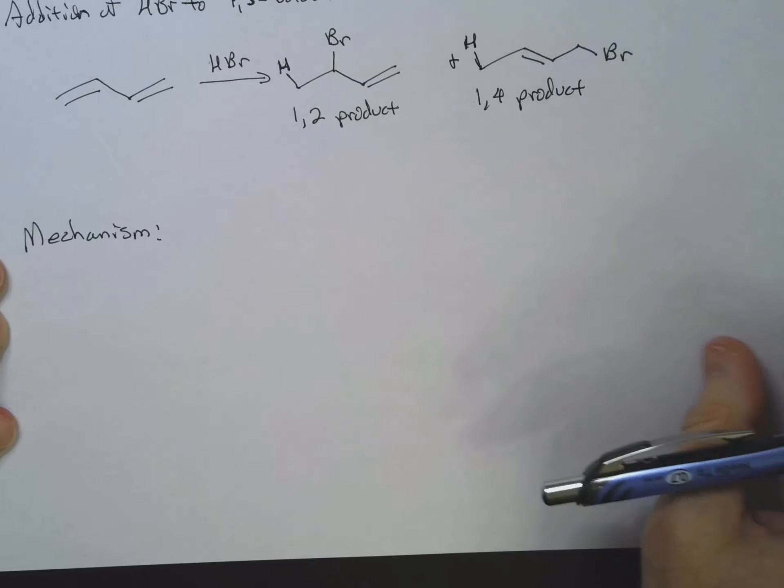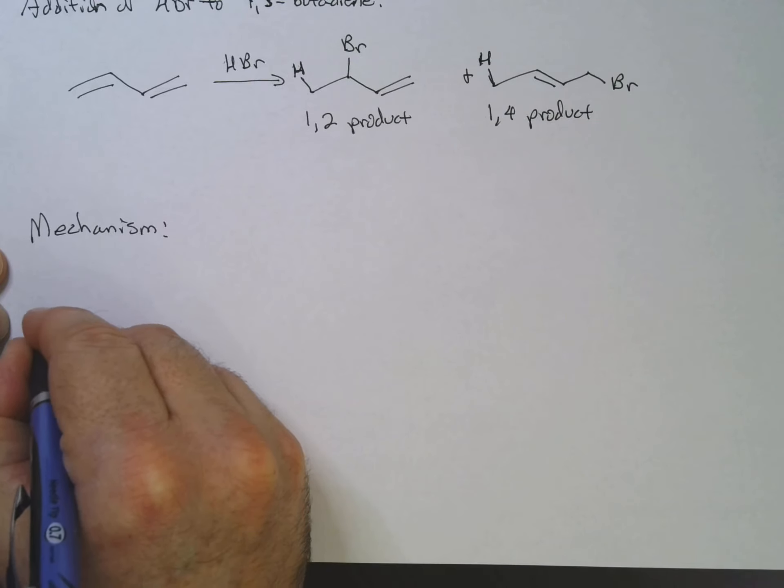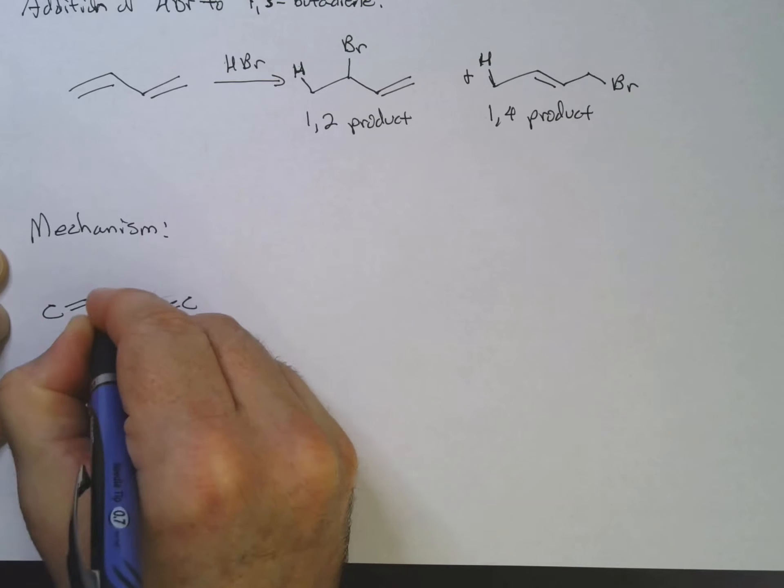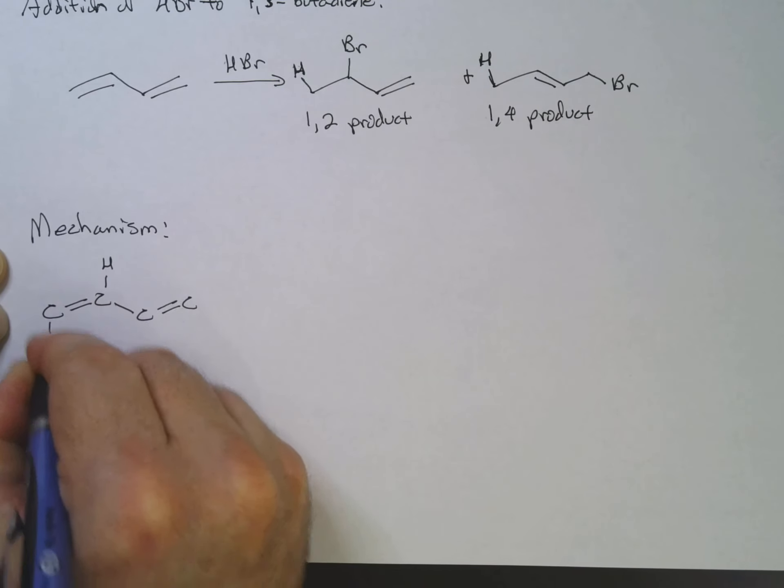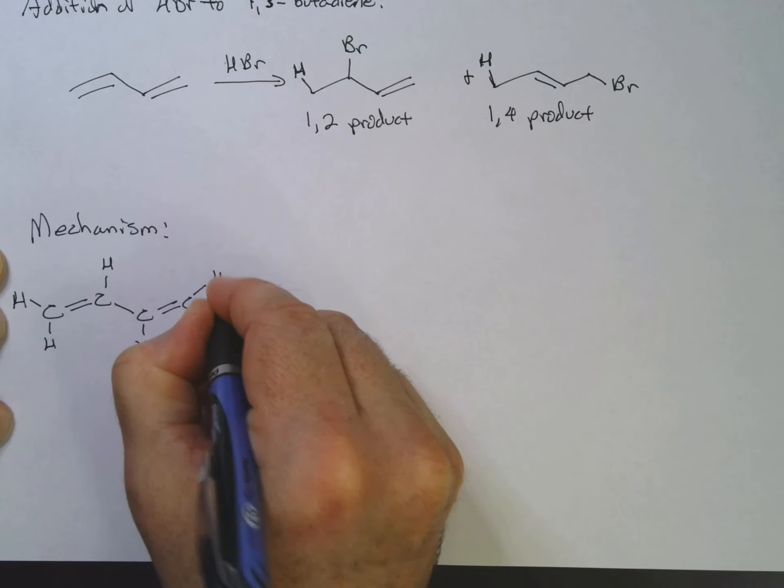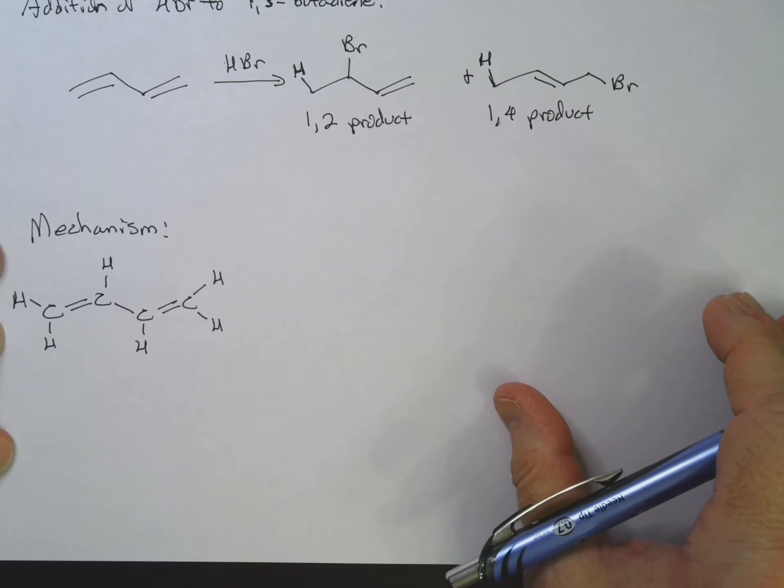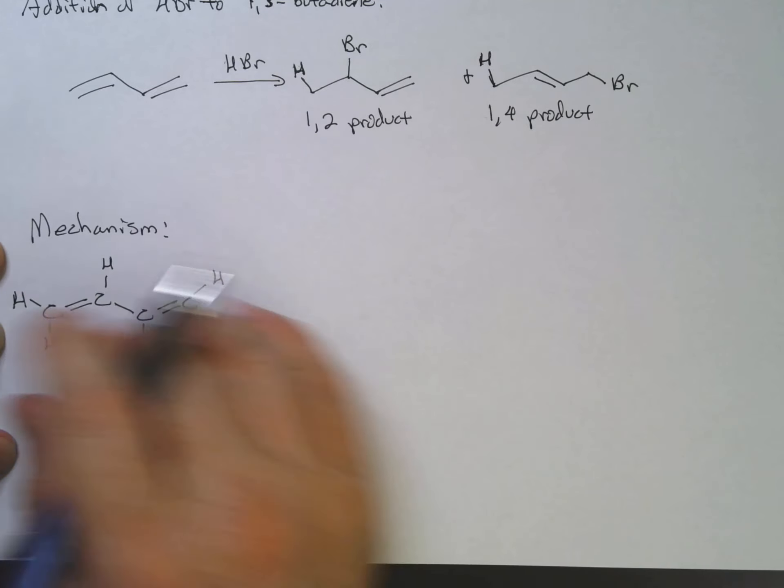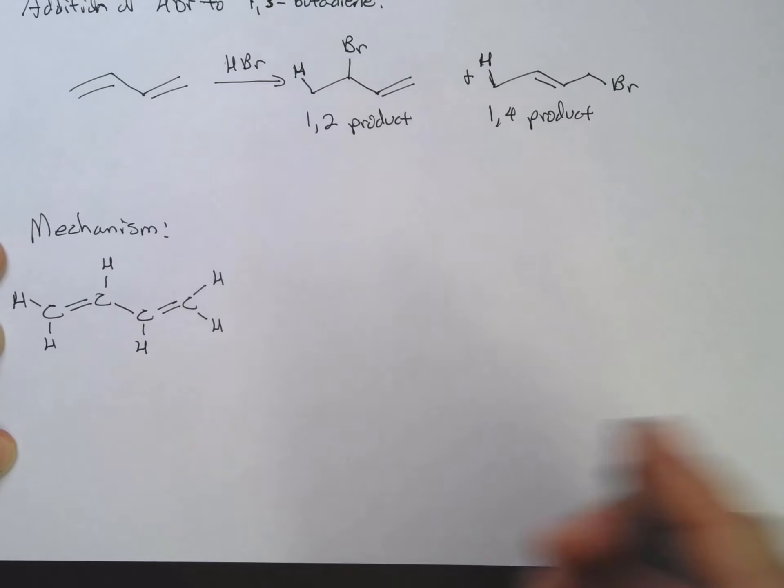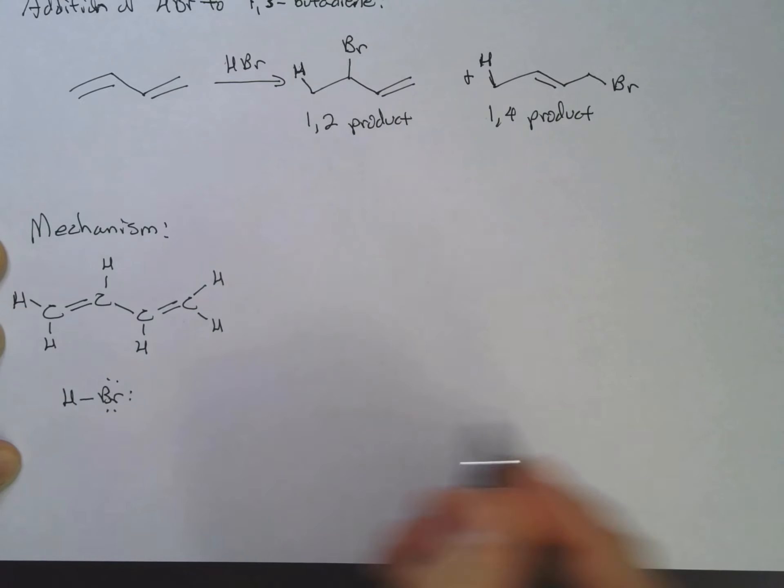So let's take a look at this mechanism. We'll go ahead and start with our diene here. Here's our 1,3-butadiene. I'm drawing in the carbons and the hydrogens just so we can follow along a little bit better. So let's take our HBr. Lone pairs—don't forget your lone pairs.